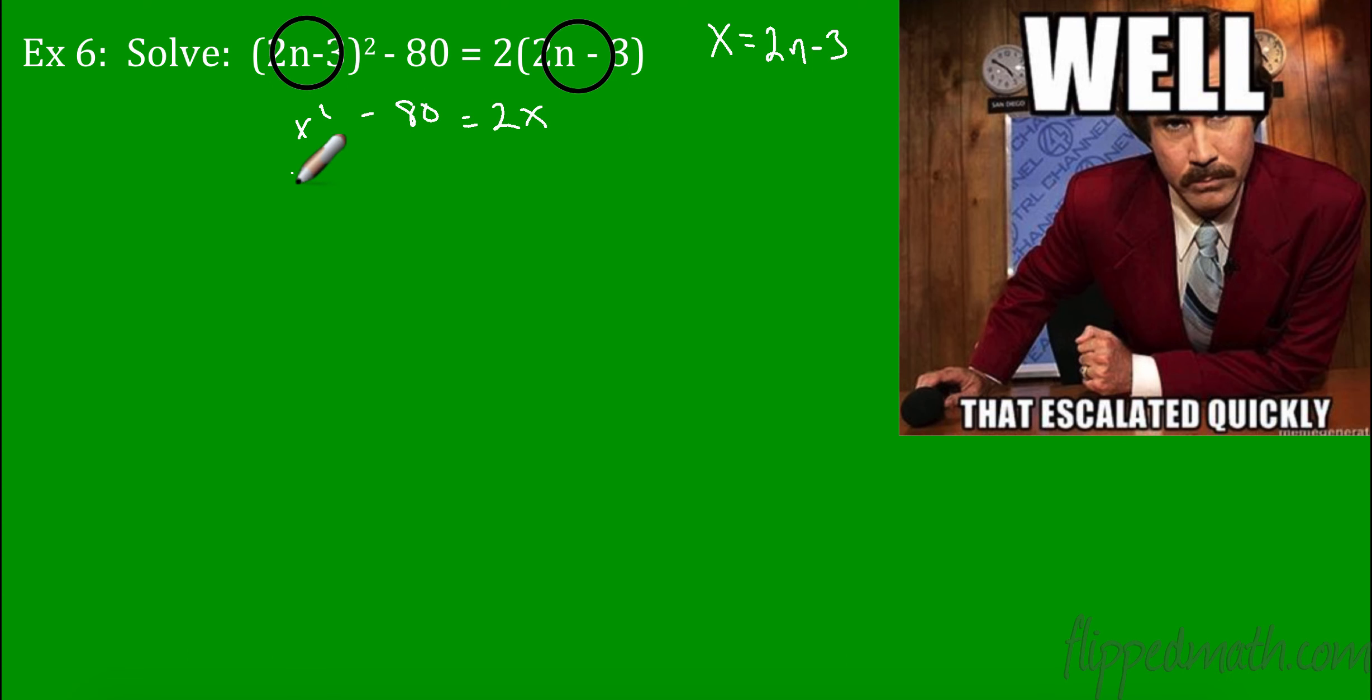Well, now that's not bad. x squared. Let's subtract 2x. Make sure we have to get it in a standard form. Highest exponent to lowest exponent. Now we can factor two numbers that multiply to negative 80 and add to negative 2 would be negative 10 and 8. Set those equal to 0. And solve. So x equals 10 and x equals negative 8.